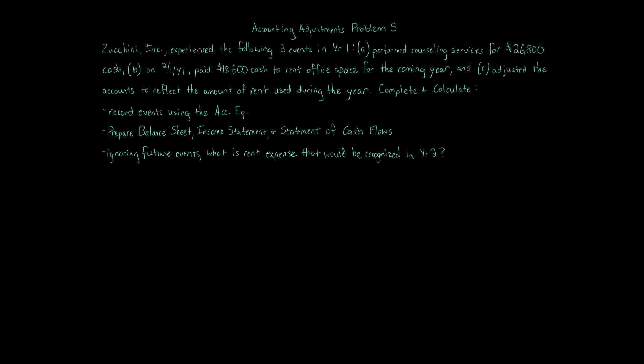Accounting adjustments problem five. Zucchini Inc. experienced the following three events in year one: performed counseling services for $26,800 cash, on February 1st year one paid $18,600 cash to rent office space for the coming year and adjusted the accounts to reflect the amount of rent used during the year. Complete and calculate the following.